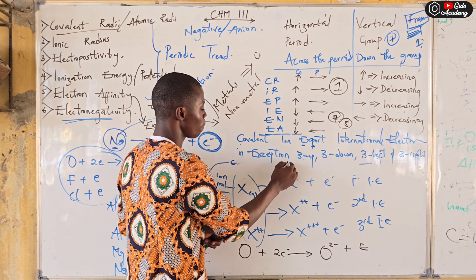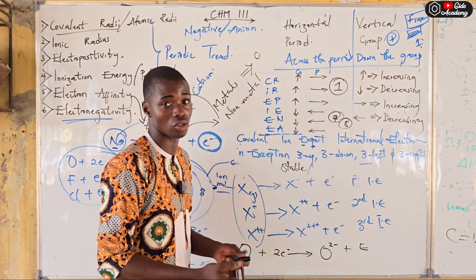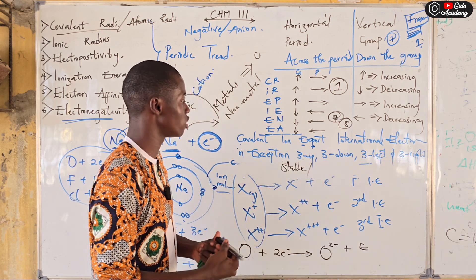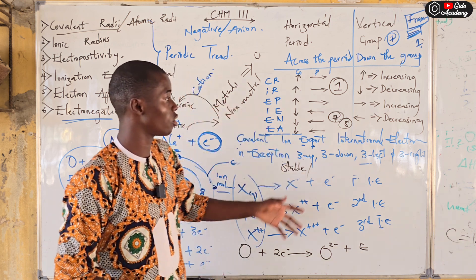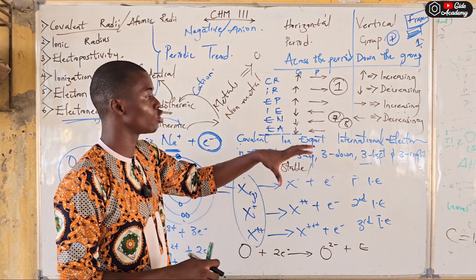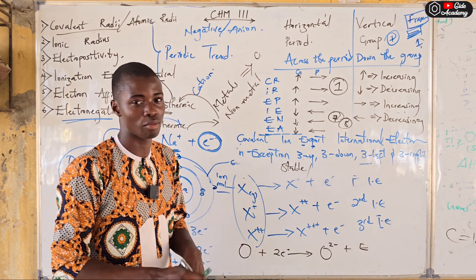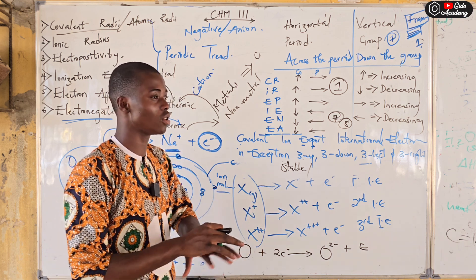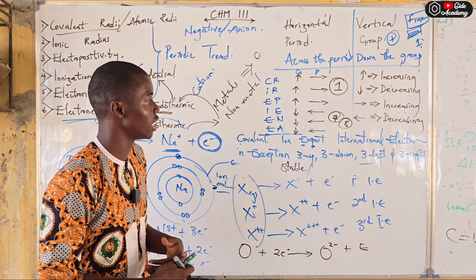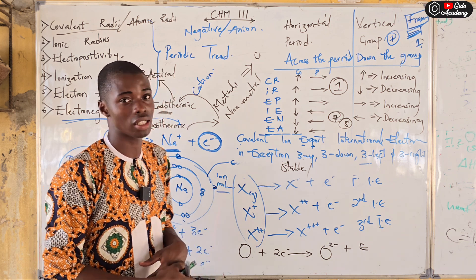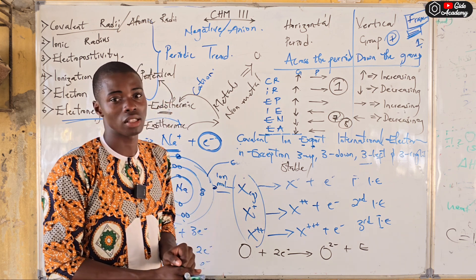Group 8 elements are not considered in these periodic trends because they are very stable and don't undergo normal chemical reactions. That's why it is very unusual to see argon, xenon, or krypton in a normal chemical reaction. Though noble gases do react in certain contexts, there are some reactions that noble gases — the stable elements — do undergo.